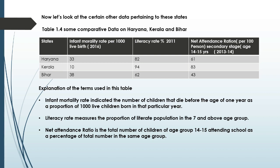Literacy rate and infant mortality rate we have discussed in class 9 in detail. For net attendance ratio, let me give you one simple example. Suppose in any village or city there are 100 children in the age group of 14 and 15. Out of those 100 children, how many are attending school? That is called net attendance ratio. So in simple words, in Kerala, if 100 children are there, 83 are attending school, whereas in Bihar, out of 100, only 43 — less than half — are going to school.